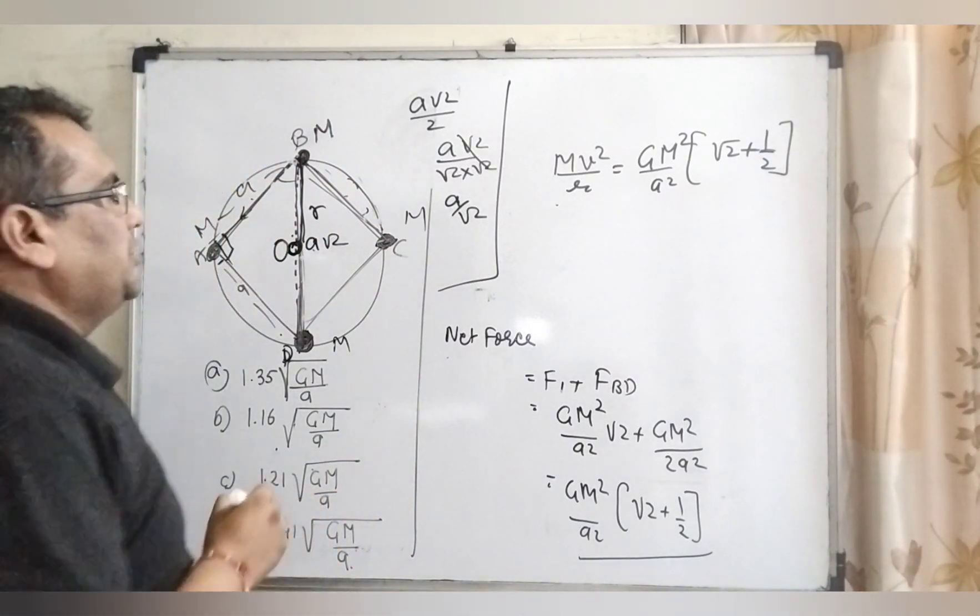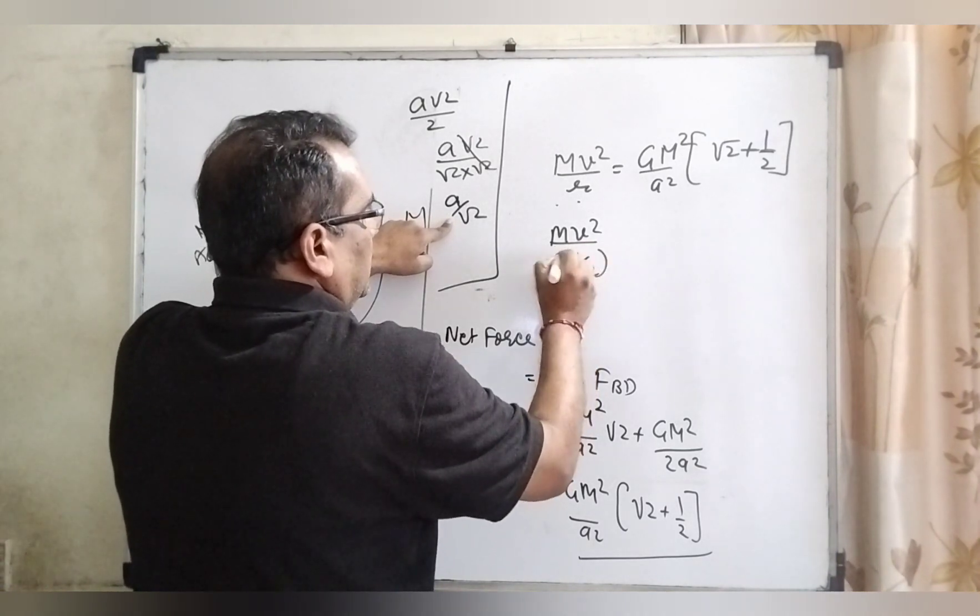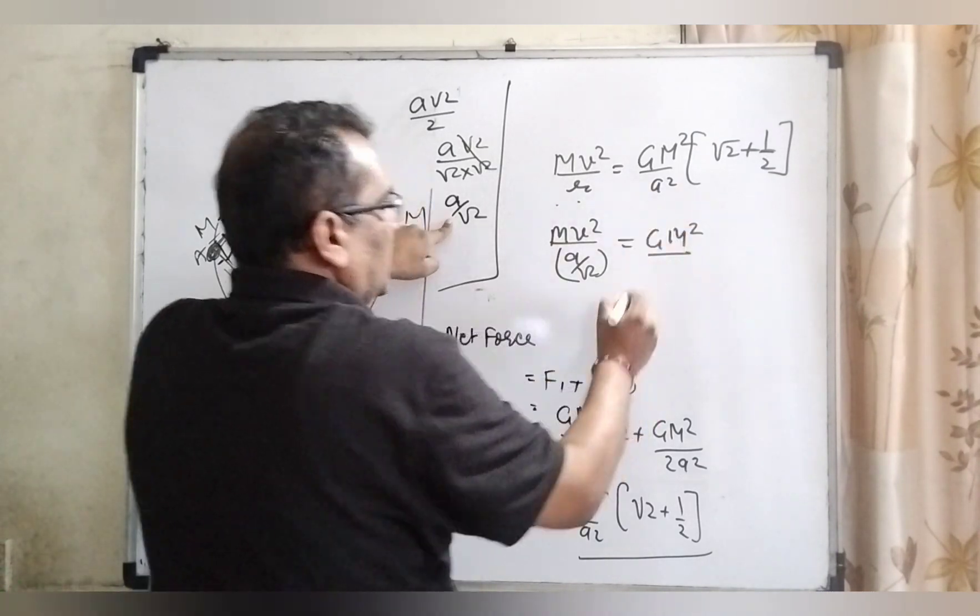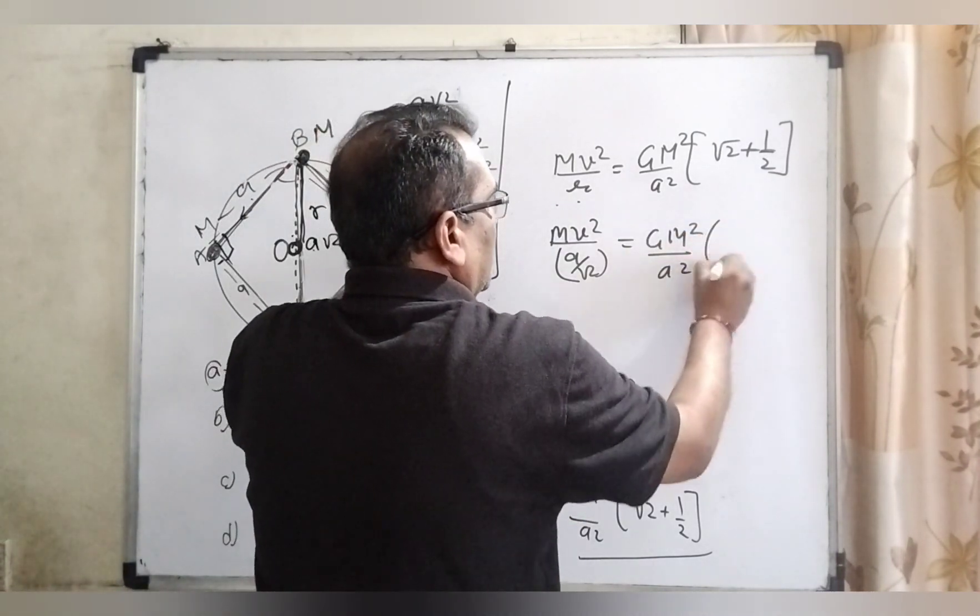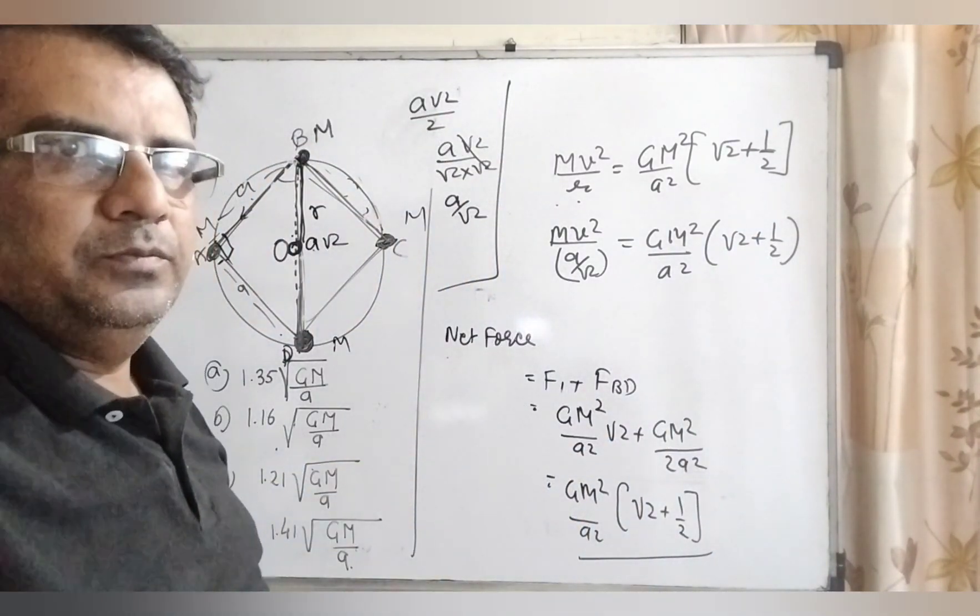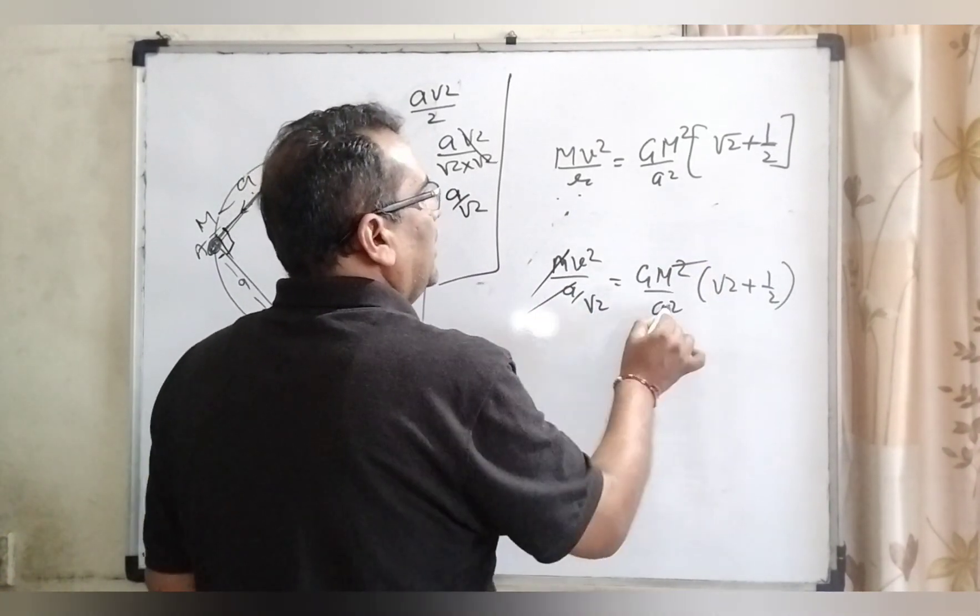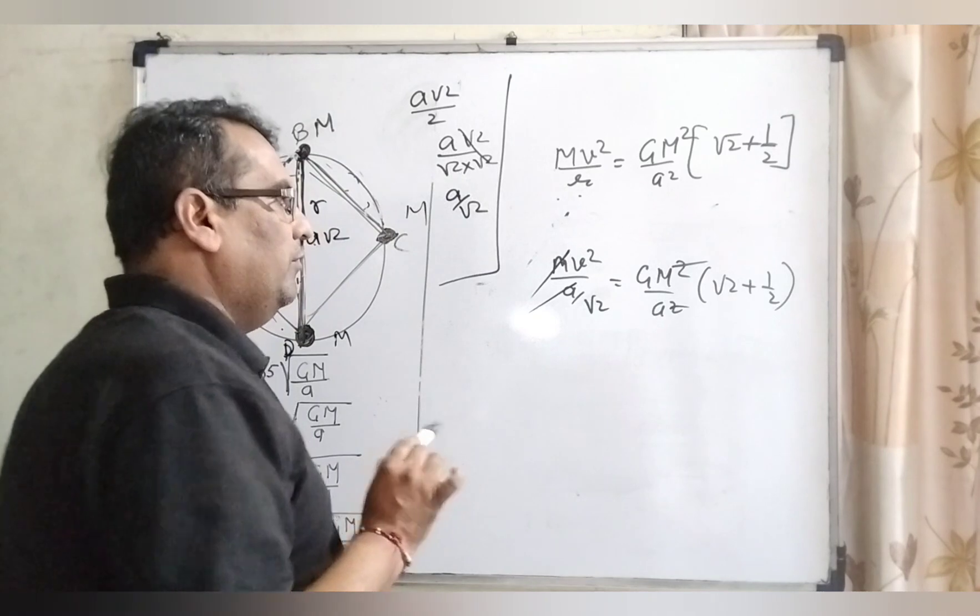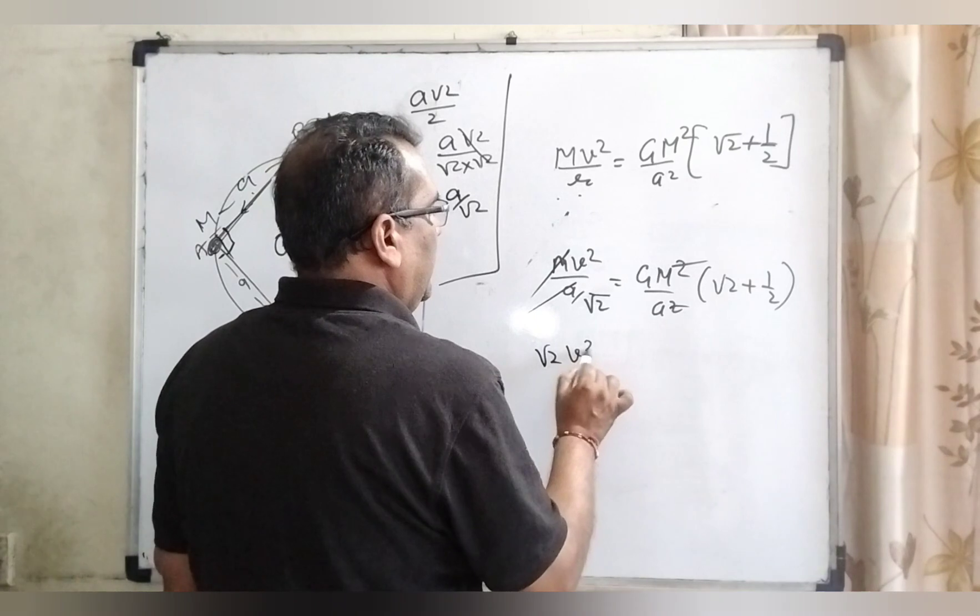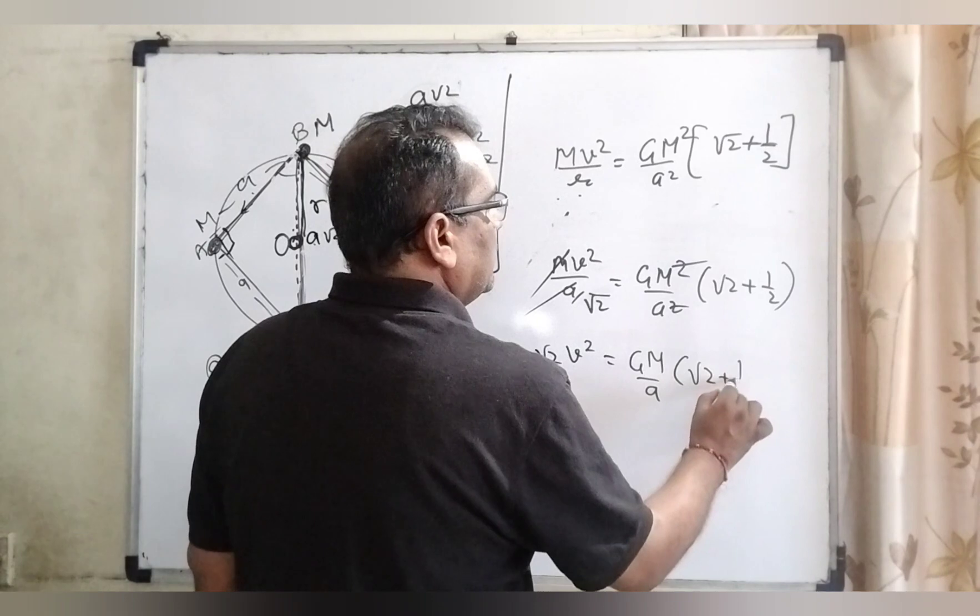Now substitute the value of R. What is R? A by root 2 equal to GM square A square root 2 plus 1 by 2. Now this M and this M cancel out, one A and A square, one A cancels out. This root 2 reaches to the numerator, root 2 V square GM upon A root 2 plus 1 by 2.